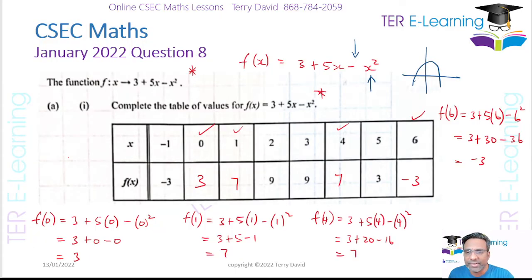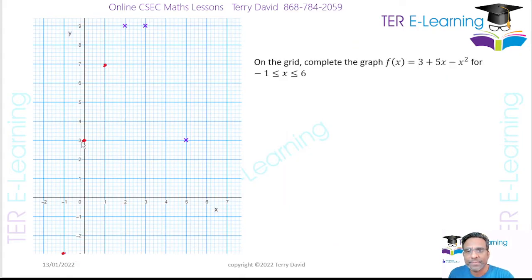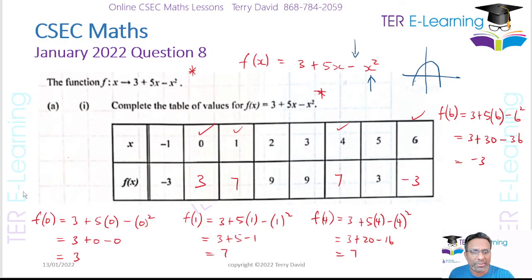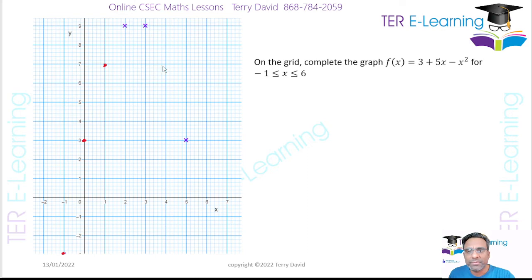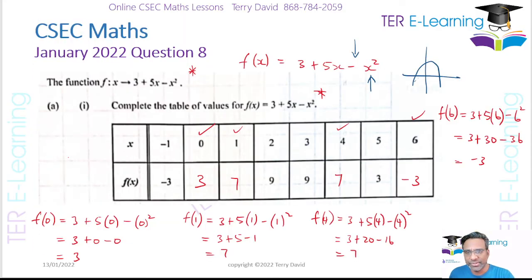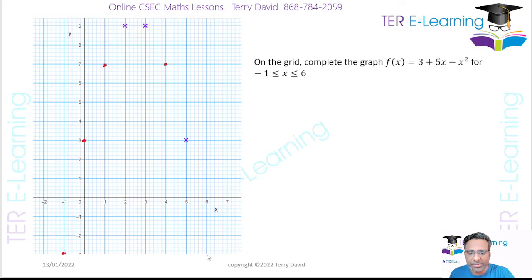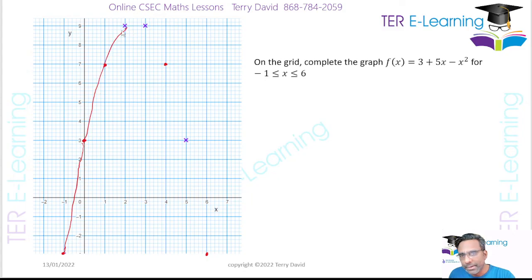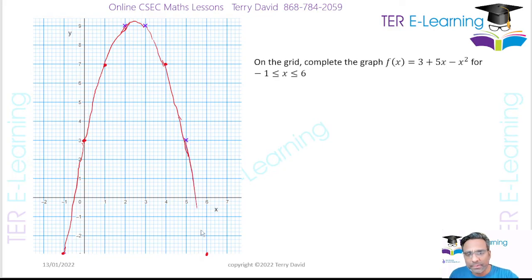The next point is (1, 7), which you plot here. The one we worked out was (4, 7), which goes here. They already plotted (5, 3) for us. The last point is (6, −3), which is down here. So we complete the graph by taking a sharpened pencil and sketching a smooth curve through all the points. This is what your graph is supposed to look like — I've given you a clean curve.